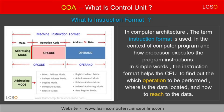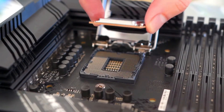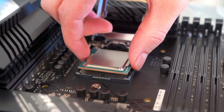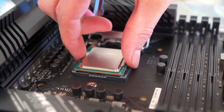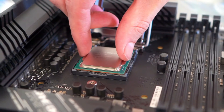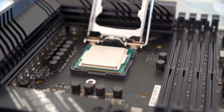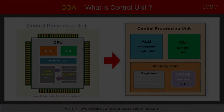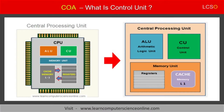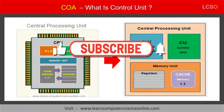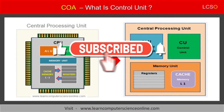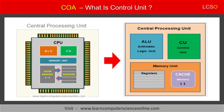First, it decodes the program instructions so that the processor can operate on the data. Second, the control unit also controls the processing speed of the processor and the various operations performed by the processor. However, in order to understand what is a control unit and its functions in computer architecture, we need to first study how the microprocessor works.